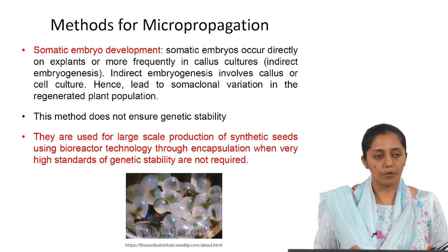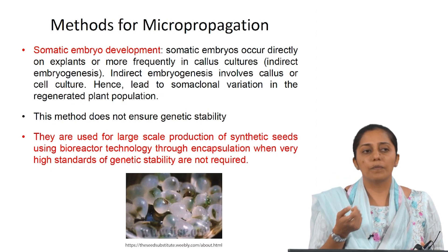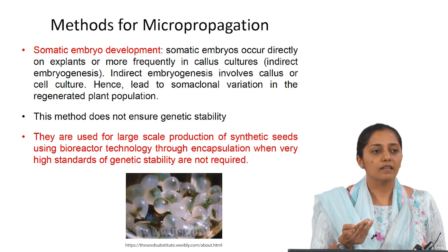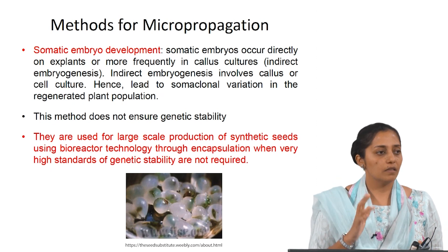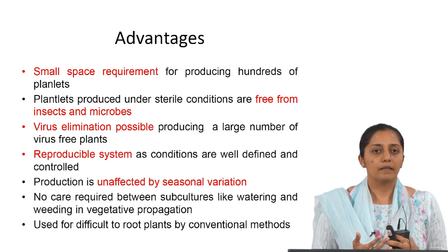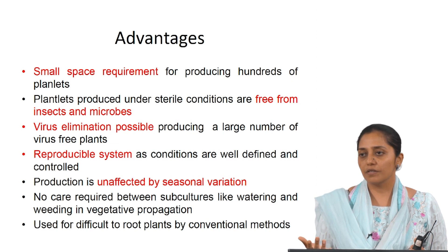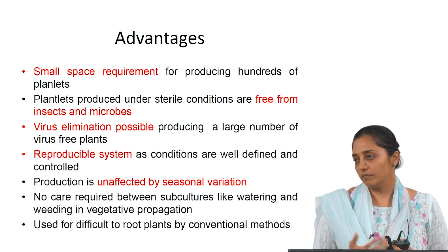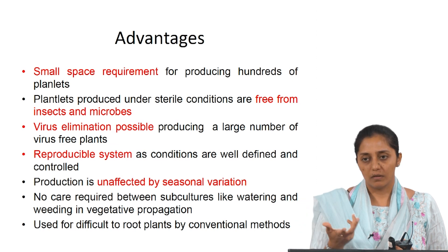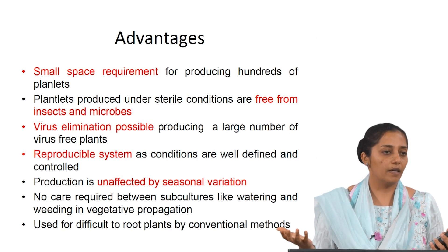Somatic embryos can be used for production of synthetic seeds. In the picture, these are gel beads — somatic embryos are immobilized, similar to plant cell immobilization. What is critical here is the viability of the somatic embryos in the gel. Advantages of micropropagation: small space requirement, plantlets produced are free from insects and microbes because grown under controlled conditions, and virus elimination is possible — because we make use of meristems to bring about micropropagation. It is also a reproducible system as conditions are maintained under controlled environment.